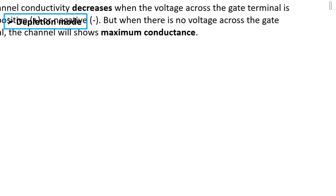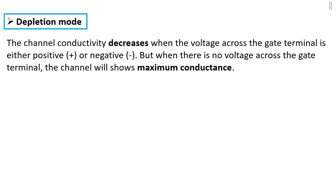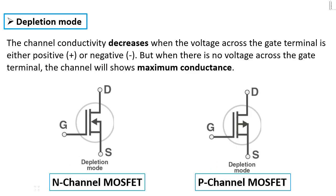Let's see the depletion mode first. The channel conductivity decreases when the voltage across the gate terminal is either positive or negative. But when there is no voltage across the gate terminal, the channel will conduct with maximum conductivity. As you can see in this circuit diagram, this is the n-channel MOSFET and here is the p-channel MOSFET.